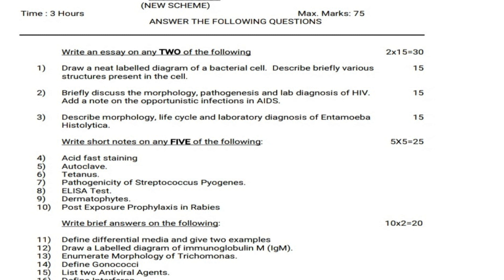Third question: Describe the morphology, life cycle and laboratory diagnosis of Entamoeba histolytica. Out of these 3 questions, you have to answer any two. This is the essay section for 15 marks each — 2 into 15 equals 30 marks.